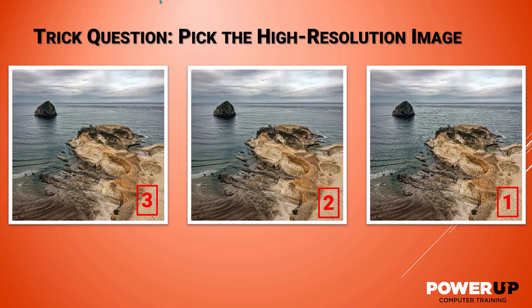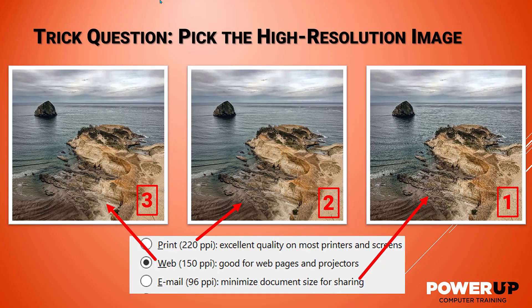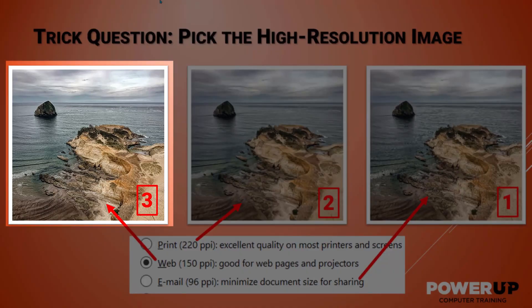On close examination within YouTube, you may not be able to reveal much of a difference, and it may be true on your conference room video projection system, but there is a difference. Image one was reduced to the lower 96 pixels per inch, and it does look more grainy compared to the other two. But I would contend that the web 150 pixels per inch image number three is just fine, and it would look even better if you did not have image number two right beside it as a comparison.